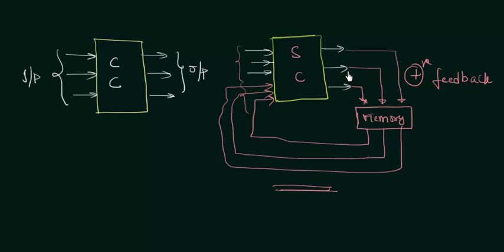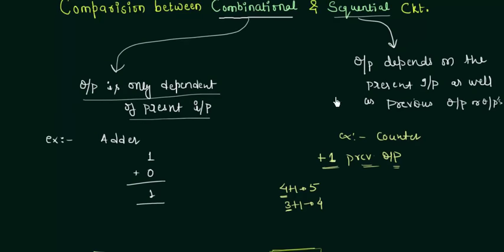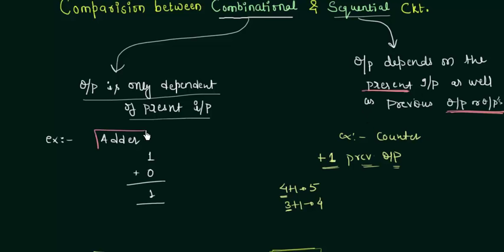The next output is generated depending upon the feedback from the memory element and the present inputs. To revise: in a combinational circuit the output is only dependent on the present input, whereas in a sequential circuit it depends upon the present input as well as the output from previous inputs. After this we will study the half adder, which is a combinational circuit, and complete combinational circuits before moving to sequential ones.